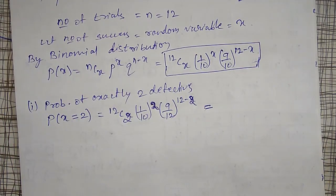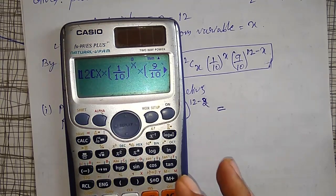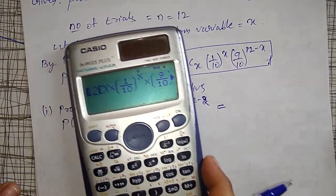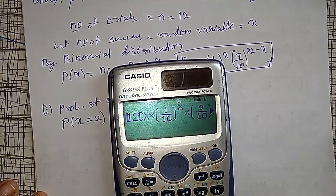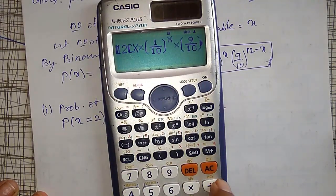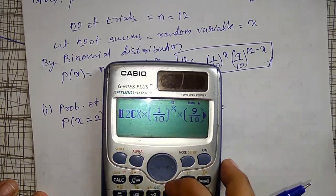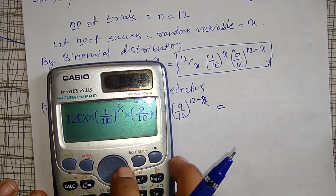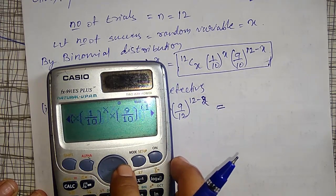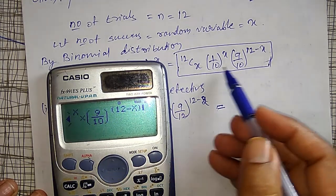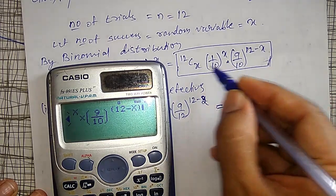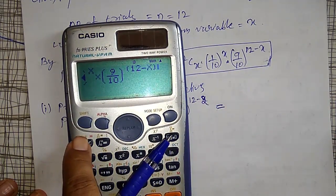I will show you the simplest way to calculate this using the calculator. Enter 12, press Shift and the divide button to get nCr, then use Alpha X for the variable. Enter (1/10) raised to x and (9/10) raised to 12 minus x, using brackets and multiplications. Press the Calc option and it will ask for the value of X.